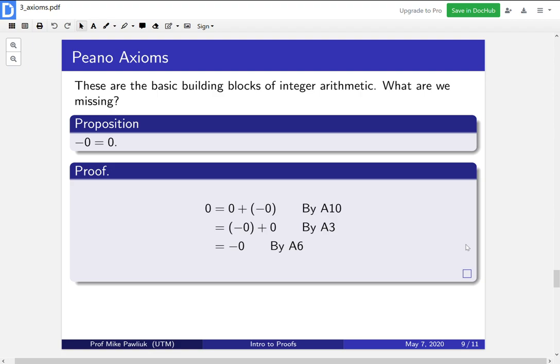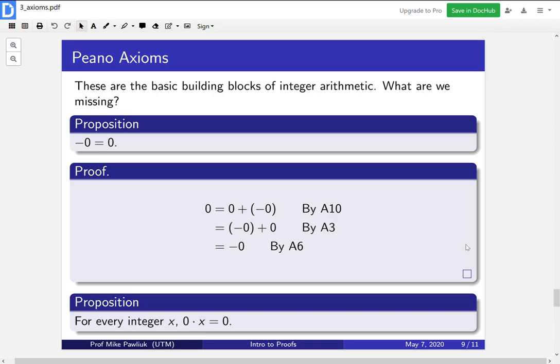What else are we missing? So here's another proposition we're missing. 0 times anything is 0. So you should try to prove that. Prove it using the axioms. And if you need to, you can use this proposition.